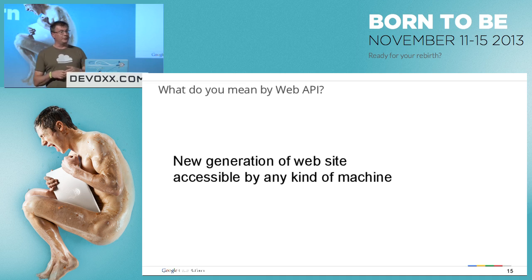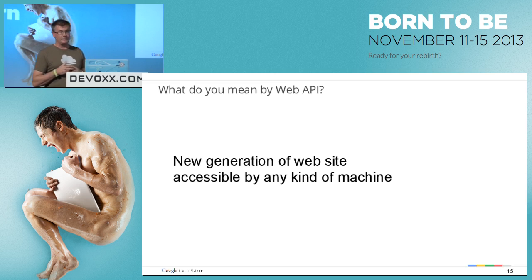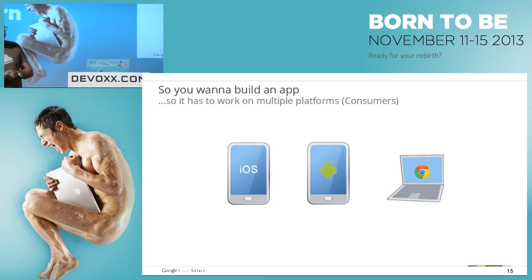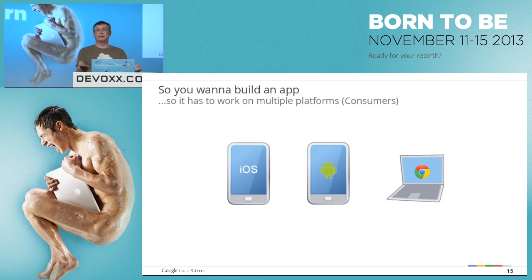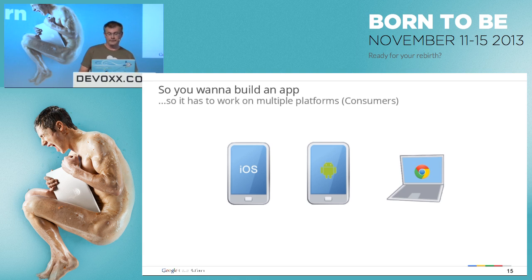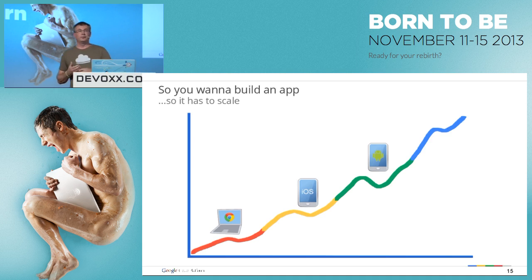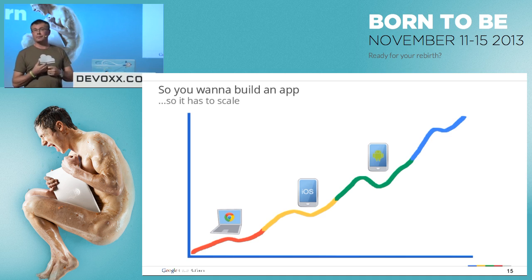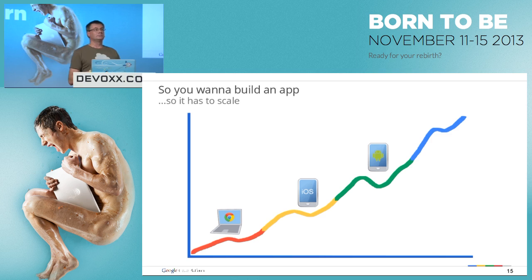Very simple definition: it's a new generation of website or web server that is meant to be accessible by any kind of machine. And machine can be iOS, Android, Internet Explorer 6 or 7, or Chrome. So you want to build an app that will be accessible with that. You can do an HTML-based website, but it's not enough. You need other types of clients like rich clients for iPhone, Android, or Blackberry. You also want your application to scale, because if your customers are using Android, it's highly possible that your website will be accessed hundreds of millions of times a day.